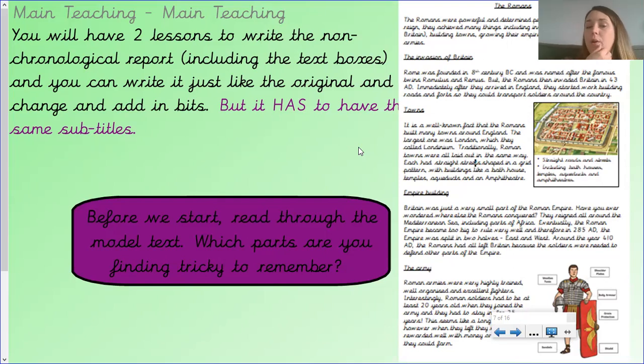Paragraph 2 is about towns, and it starts with an underlined subtitle or subheading. It is a well-known fact that the Romans built many towns around England. The largest one was London, which they called Londinium. Traditionally, Roman towns were all laid out in the same way. Each had straight streets shaped in a grid pattern with buildings like a bathhouse, temples, aqueducts, and an amphitheatre. And then we've got a text box here, which has got a picture of how Roman towns were traditionally laid out. And it tells us it had straight roads and streets, and it included bathhouses, temples, aqueducts, and amphitheatres.